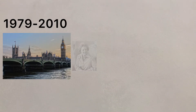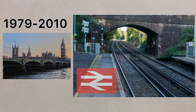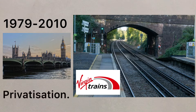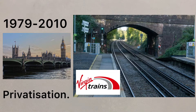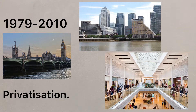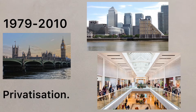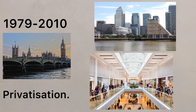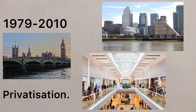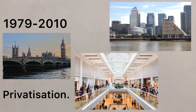Between 1979 and 2010, many state-run industries, like British Rail, were sold off to private shareholders, a process called privatisation. The UK's derelict industrial landscape started to transform into modern financial centres with modern retail outlets and new office buildings.